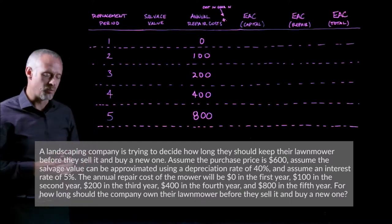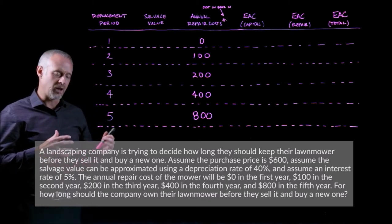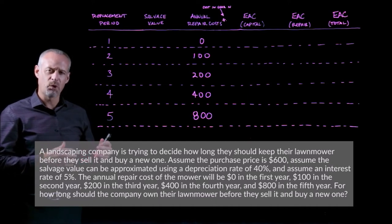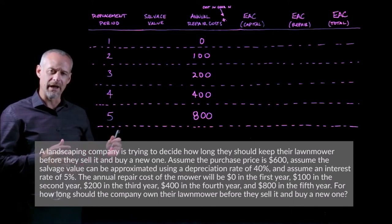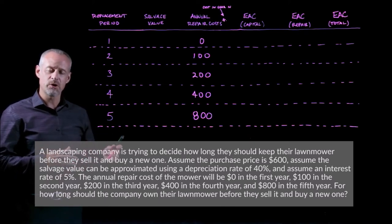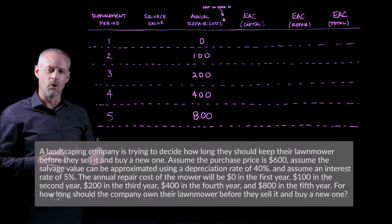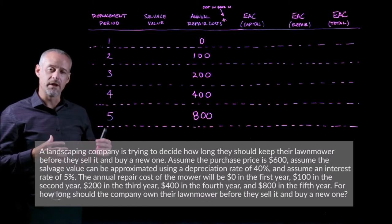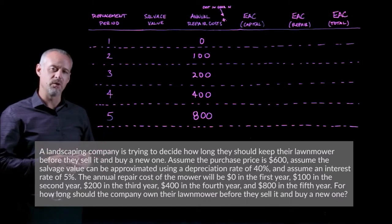In this problem, we're presented with the scenario where a company is wanting to investigate how often they should purchase a lawnmower in order to minimize their overall annual cost of ownership. We'll look at five different scenarios: purchasing the lawnmower and owning it for one year then reselling it, owning for two years, three years, four years, and five years. The problem also tells us what we can expect for repair costs if we own the lawnmower for any number of years between one and five.